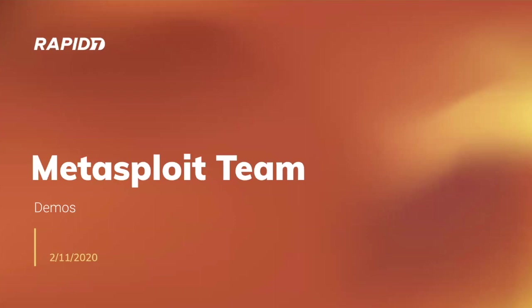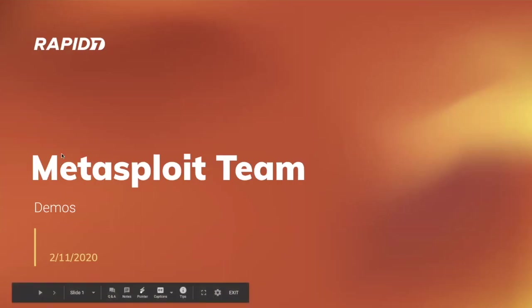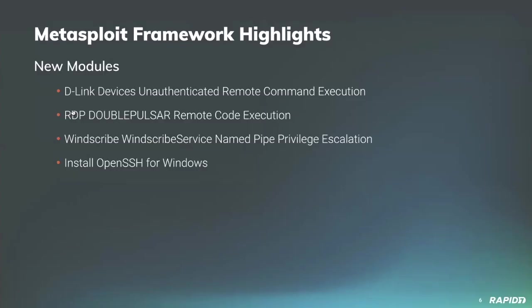I've got some good stuff to cover today. Community contributor sicker_tens provided a new module for exploiting D-Link routers with vulnerable firmware, where targets allow commands through either the UUID header or the URN header in an M-Search request to get passed to an unsanitized system call — unauthenticated remote code execution on the target. Shelby did a demo of this module in our last demo meeting; you can check out that recording to see it in action.